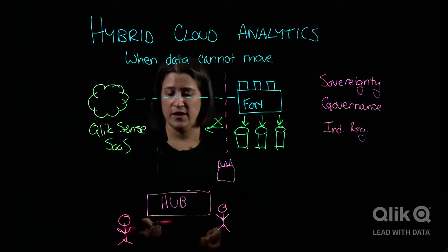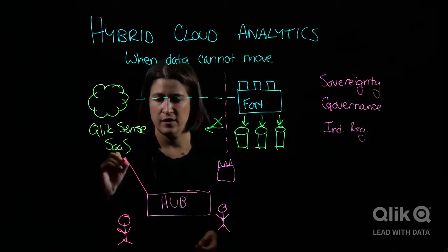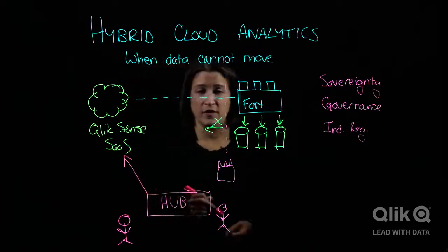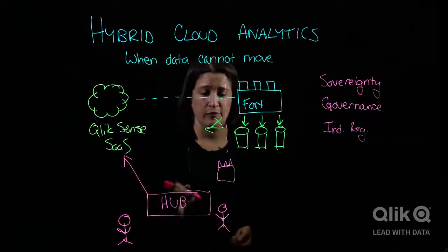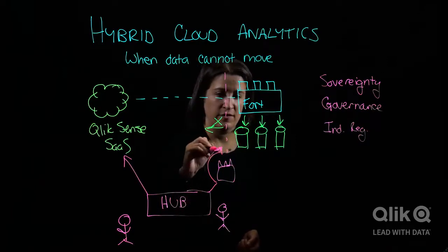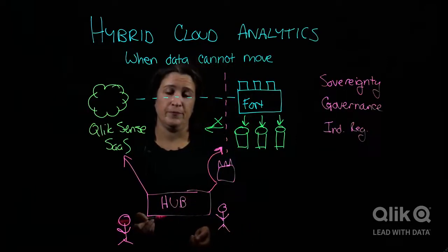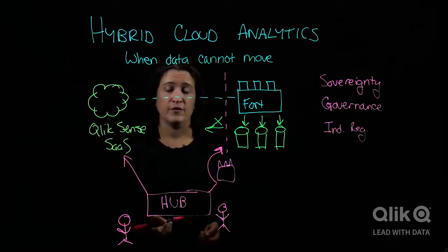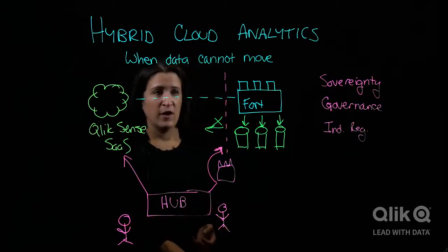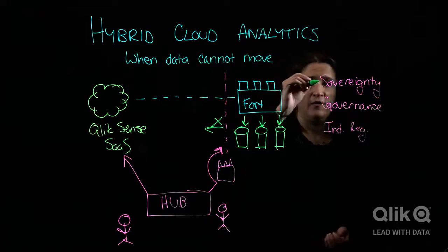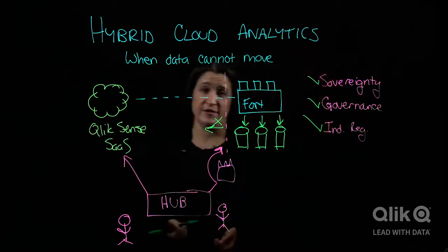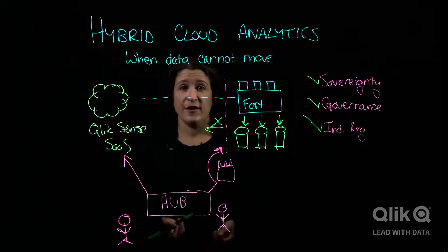As long as they're connected to the internet, they can access the content that's in Qlik Cloud. And as long as they're connected to your network and securely behind that firewall, they can access all of that content that's running in the fort. So that's a really easy and convenient way that you can get all the benefits of SaaS without compromising any of the data requirements and data locality requirements that are specific to your organization. Thanks a lot for watching.